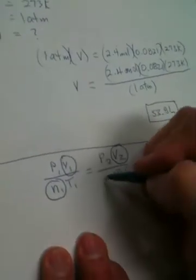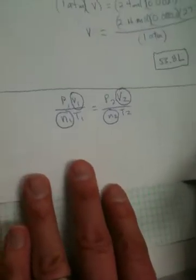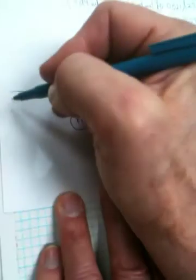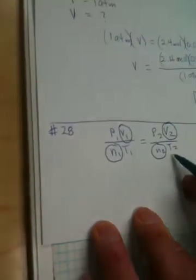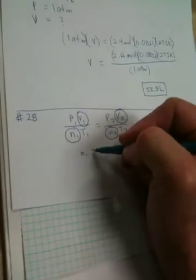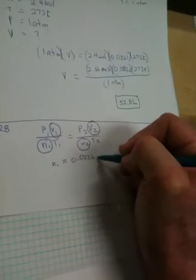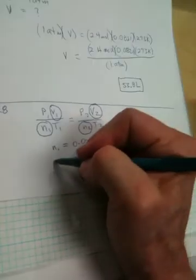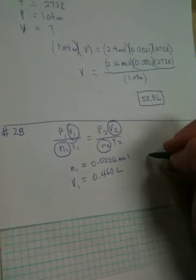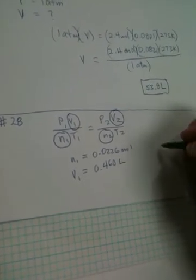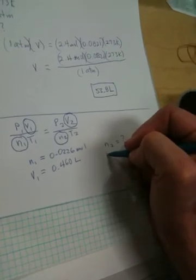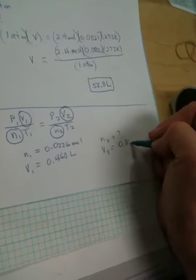And now what we do, since these are the guys that we're going to use, we're going to separate them out from the combined gas law. This, by the way, is number 28. And now we're going to use these guys and do a plug-and-play. So our starting moles N1 is equal to 0.0226 moles. And our volume 1 is equal to 0.460 liters. And now the N2 is something that we're looking for. So that's going to be equal to our unknown. And they gave us a new volume. So V2 is equal to 0.865 liters.